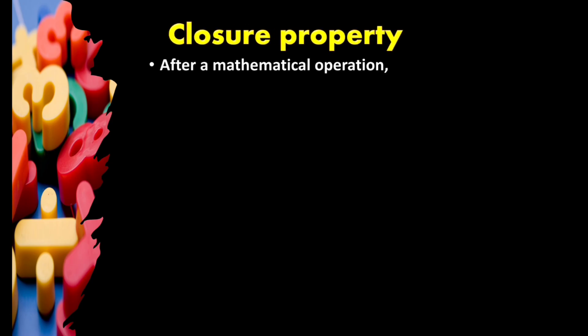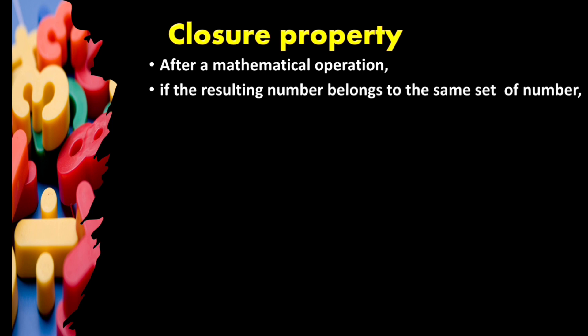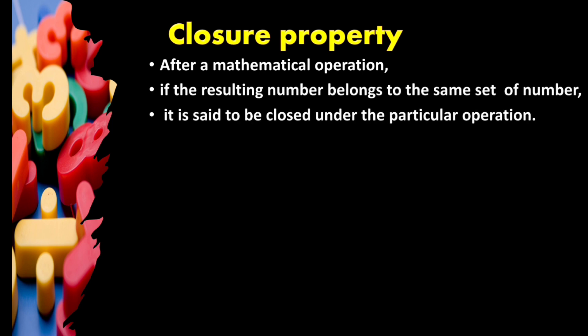Let us get started from closure property of numbers. What do you mean by closure property? After a mathematical operation, if the resulting number belongs to the same set of numbers, it is said to be closed under that particular operation. That means after doing any operation — whether addition, subtraction, multiplication, or division — if the resulting number also belongs to the same set, it is said to be the closure property.